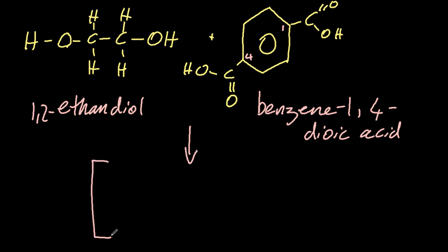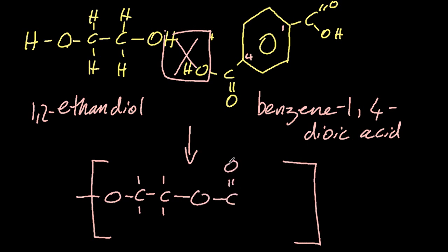So a diol and a dioic acid and be very careful to have lines going outside of the square brackets of the repeating unit. They must go outside or you won't get the point. And don't forget the N.